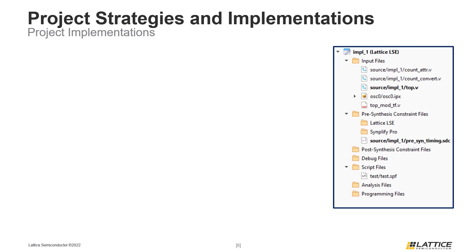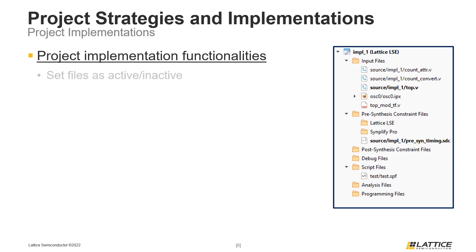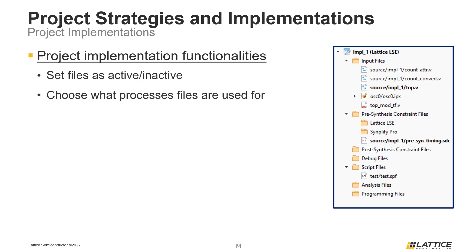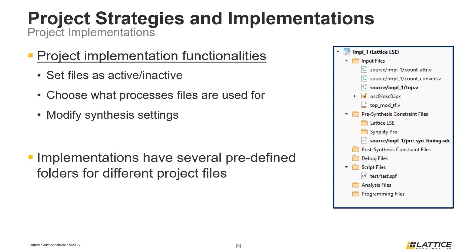The next section in the file list tab covers project implementations and project files. Project implementations are used to control which files are active and what processes they are used for. Additionally, implementations can be used to try different synthesis engines and change other synthesis-related settings. Project implementations come with several predefined folders, and as files are added they will be automatically organized into these folders.